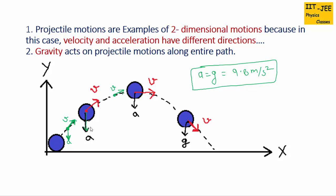At all points, the acceleration vector should point downward. Suppose at this point the ball is moving downward — the tangent would be like this and the arrow would be towards down, not the other way. That's wrong. We have to draw the arrow in the direction of the ball's motion. This is the velocity vector, and the acceleration vector would be towards down like this.